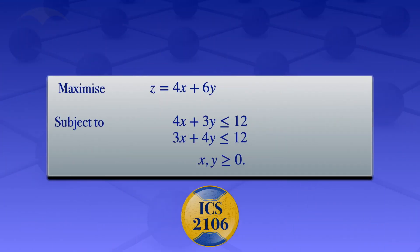In this tutorial I'm going to use the graphical method to solve the linear programming problem: maximize z equals 4x plus 6y, subject to 4x plus 3y less than or equals 12, 3x plus 4y less than or equals 12, x and y greater than or equals to 0.